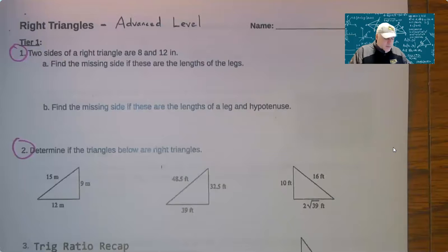All right, so I'm going to cover some of these. Most of these you should know, and I'll talk about the harder problem at the end a little bit. Problem one, two sides of a right triangle are 8 and 12. We don't know what those two sides are, but it says find the missing side if these are the lengths of the legs.